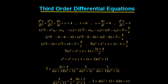Let's look at an example of a third order differential equation: d³x/dt³ + d²x/dt² + dx/dt + x = 4. The initial conditions are at t = 0, x = dx/dt = 0, and d²x/dt² = 3.